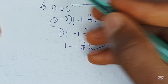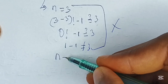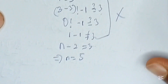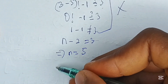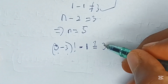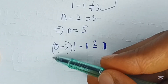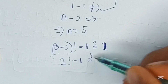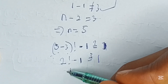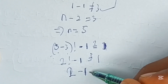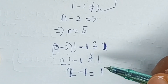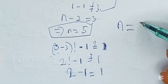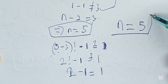For the second solution, we have n minus 2 is equal to 3, implying that n is equal to 5. Testing this, we have 5 minus 3 factorial minus 1. Is this equal to 1? 5 minus 3 is equal to 2, so 2 factorial minus 1. 2 factorial is 2, and 2 minus 1 is equal to 1. Hence, the only answer for this question is n is equal to 5. This is the solution.